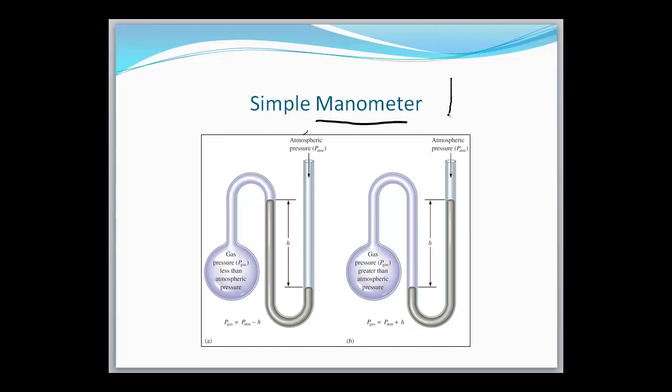These two here are representing open manometers. In other words, air pressure is pushing down on this column of mercury, which is then going to push the column of mercury up in this direction. So if you have a gas in your cylinder here, the gas is going to be moving through the column. So it'll essentially be pushing down on the column of mercury here, while air pressure is pushing down on the column of mercury here.